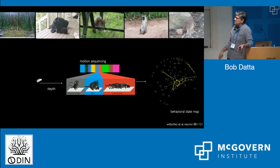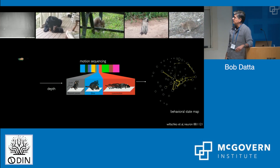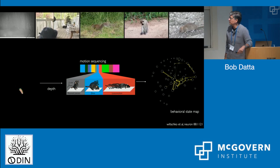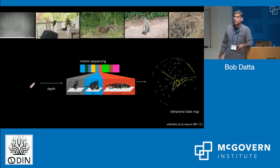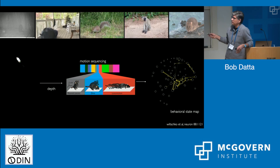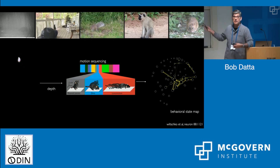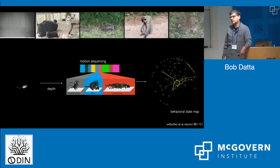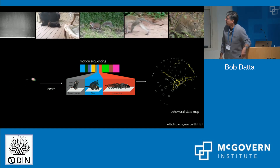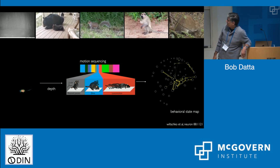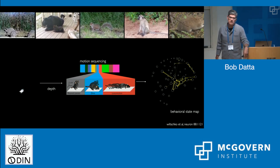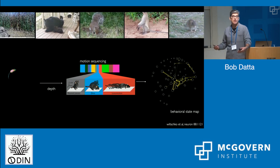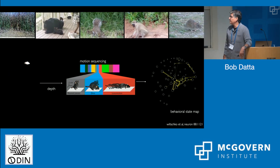Each node is a behavioral syllable. Its diameter reflects how often that syllable is used in a particular experiment, and the yellow directional arrows capture the observed likelihood of transition over time from one to the other. So when the mouse does this thing, it's almost certain to do this thing next. These kinds of behavioral state maps do a really nice job of quantitatively encapsulating the overall behavioral comportment of any mouse in a given experiment, which allows us to use this approach to objectively think about how perturbations — genetic, optogenetic, and otherwise — might affect behavior.